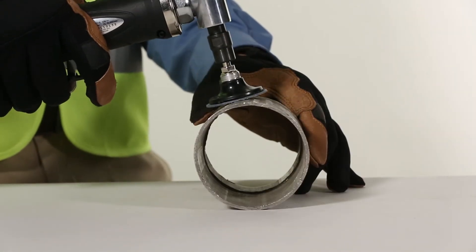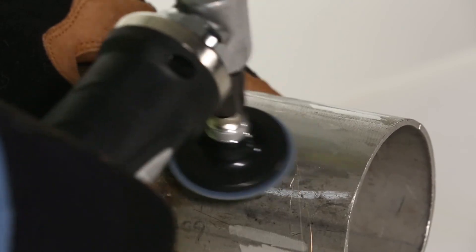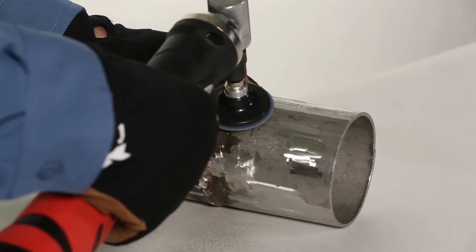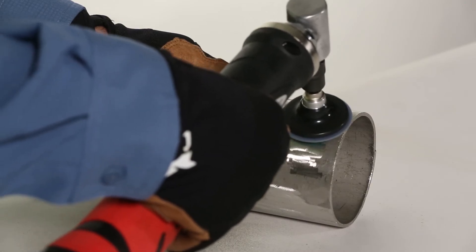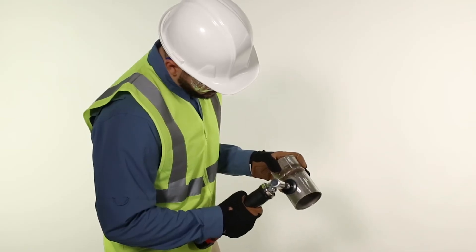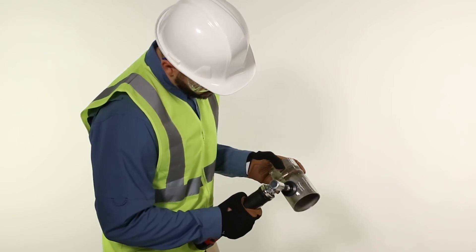Grind the sample by working the sanding disc near parallel to the surface to avoid dishing. Move the grinder in one direction so as not to cross-contaminate the fresh surface. Avoid using excess force and maintain control of the grinder to prevent removal of excess material.